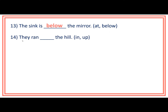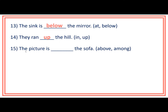Number 14: They run ___ the hill. Prepositions inside the bracket are in and up. Answer: They run up the hill. Number 15: The picture is ___ the sofa. Prepositions inside the bracket are above and among. Answer: The picture is above the sofa.